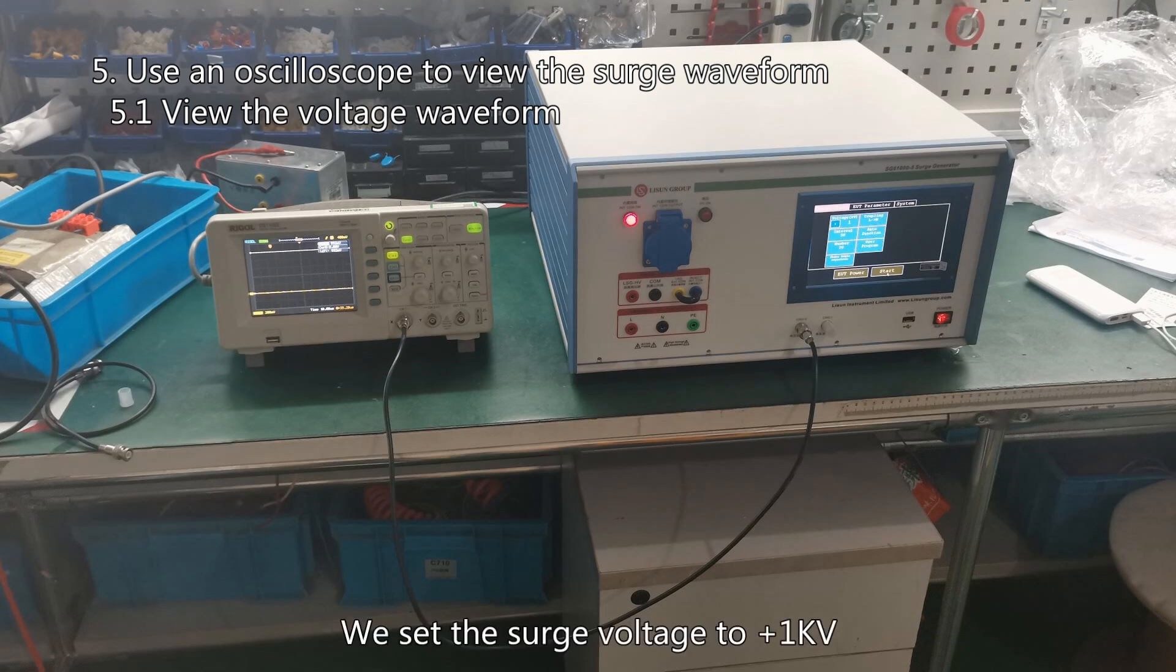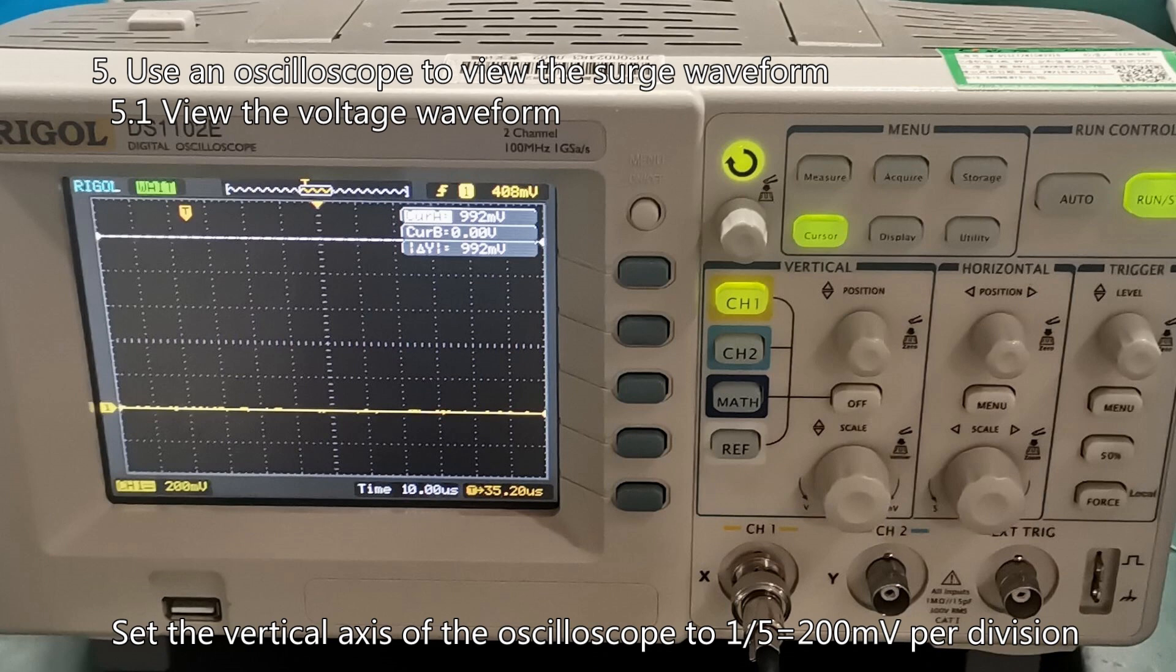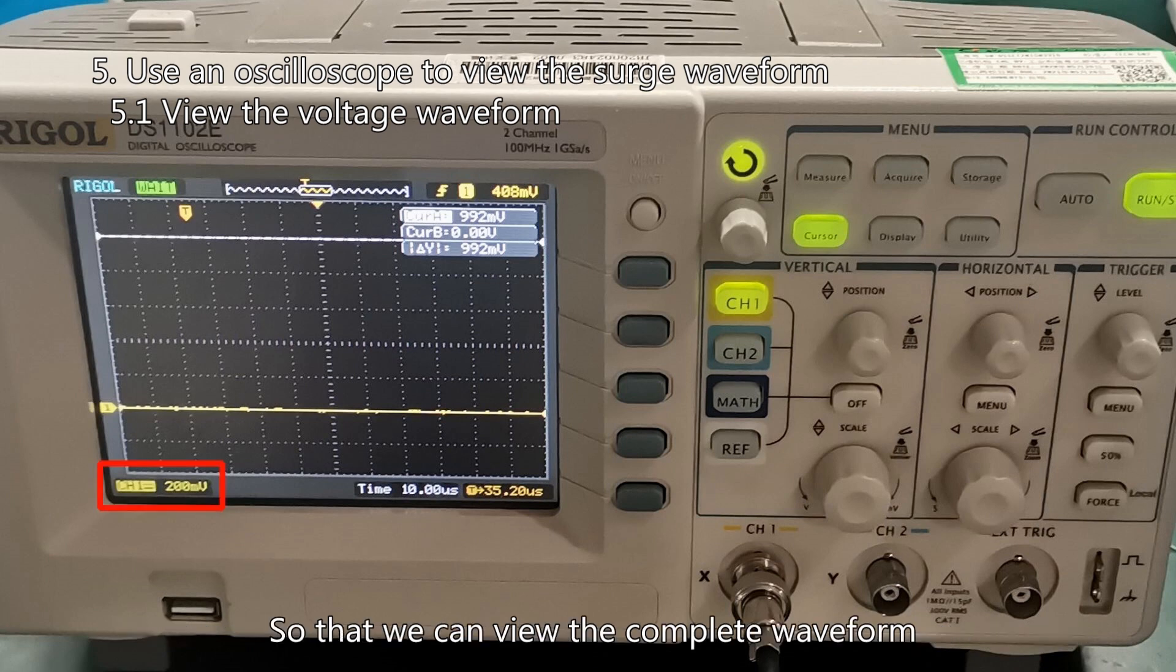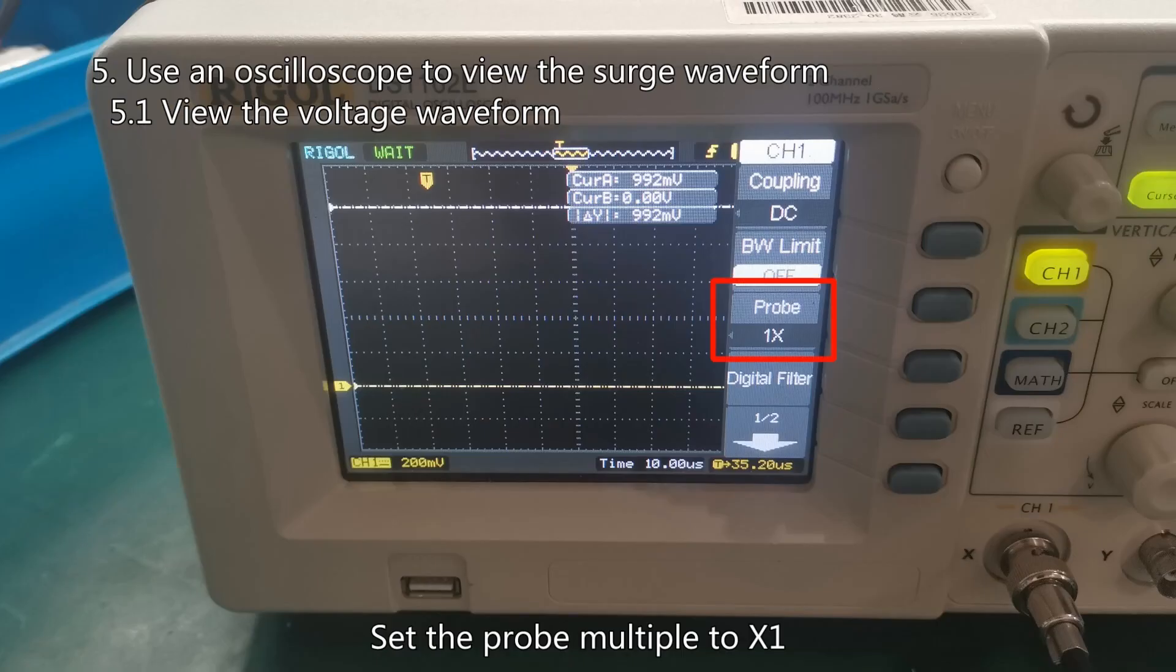We set the surge voltage to positive 1 kV, then the actual voltage to the oscilloscope is 1 V. Set the vertical axis of the oscilloscope to 200 millivolt per division so that we can view the complete waveform. Set the horizontal axis time to 10 microseconds per division. Set the probe multiple to 1.